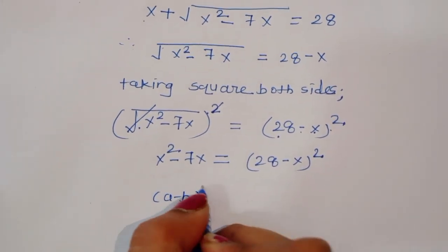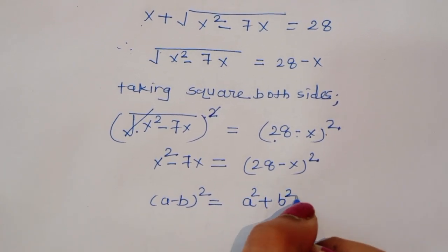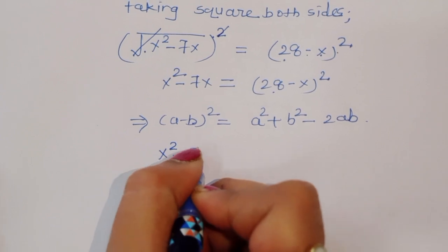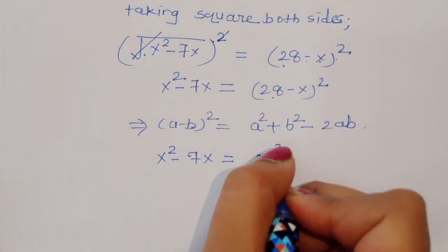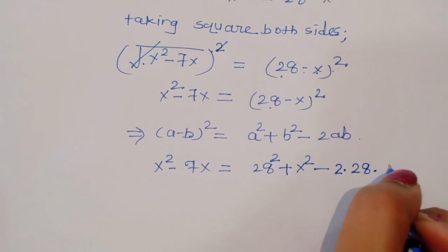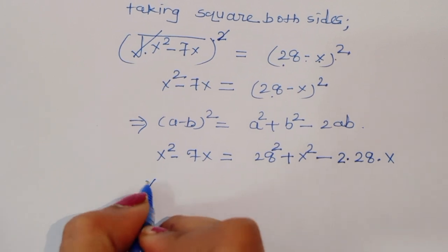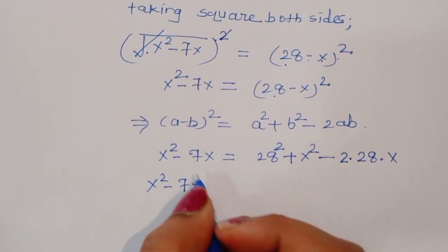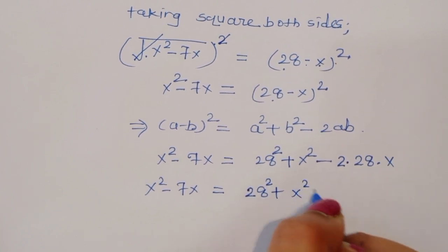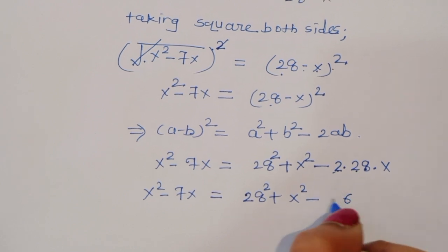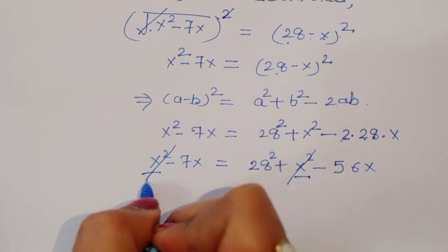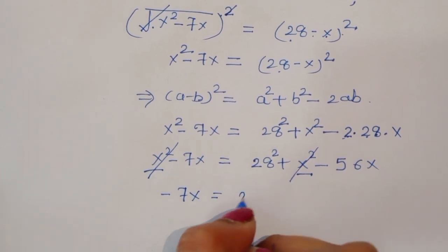We know the formula: a minus b whole square is equal to a squared plus b squared minus 2ab. Using this formula, we get x squared minus 7x is equal to 28 squared plus x squared minus 2 times 28 times x. Now you can see x squared appears on both sides, so we can cancel the x squared terms.